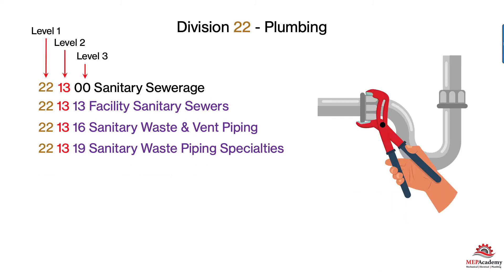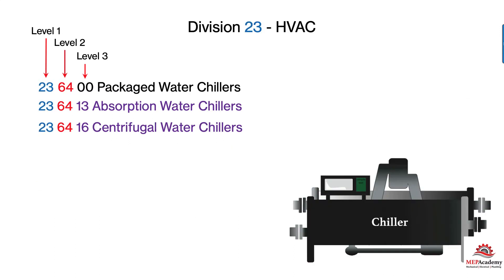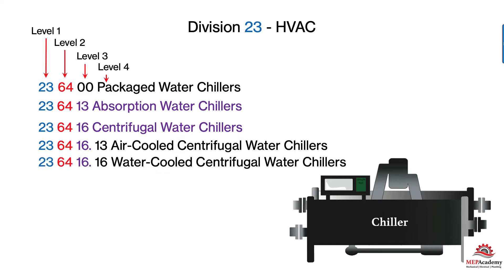Those are the main levels, but you can get another level that breaks things down even further. Engineers will put a period and then another set of numbers. For example, Sanitary Waste Piping Specialties has more than one item under it: sanitary drains, fats, oils and grease disposal systems, and grease removal devices. Same with Chillers — Centrifugal Water Chillers, number 23.64.16, can be broken into Air Cooled and Water Cooled Centrifugal Chillers. It's a way to break down the category further.